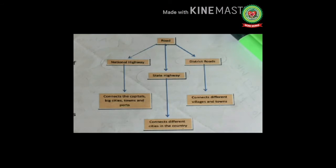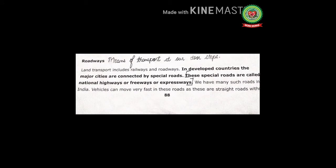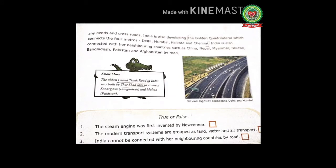In fourth standard you already learnt about types of roads. National highways connect capitals, big cities, towns, and ports. State highways connect different cities in the country. District roads connect different villages and towns. National highways are maintained by the central government, state highways by the state government, and district roads by the Zila Parishad or state public works department. Vehicles can move very fast on highways as these are straight roads without any bends or crossroads.